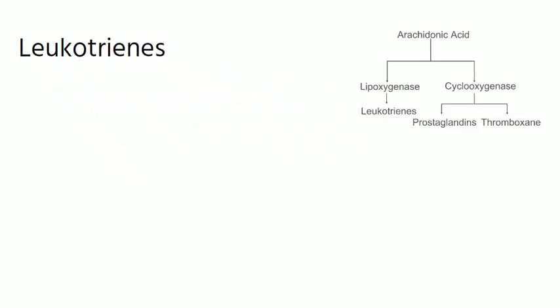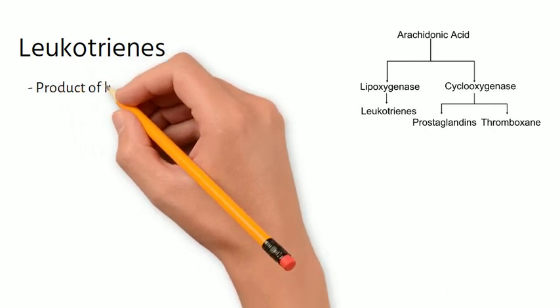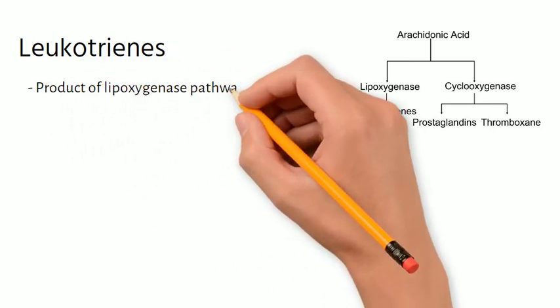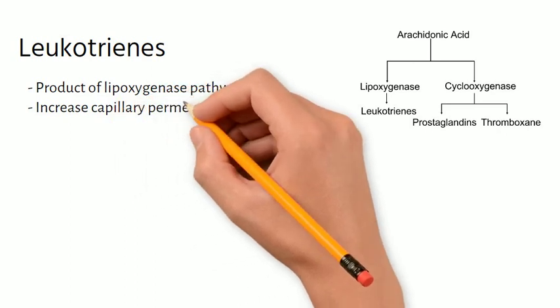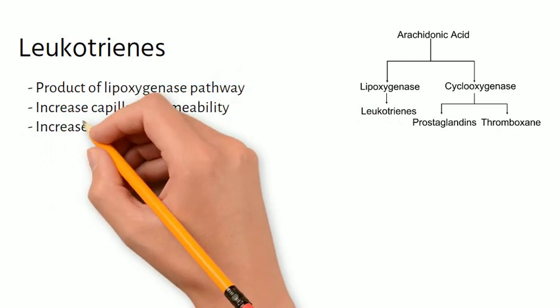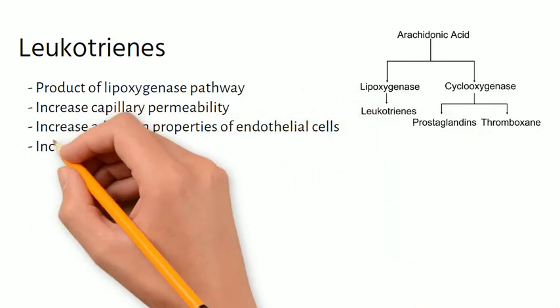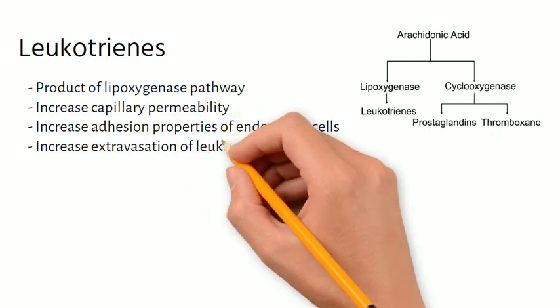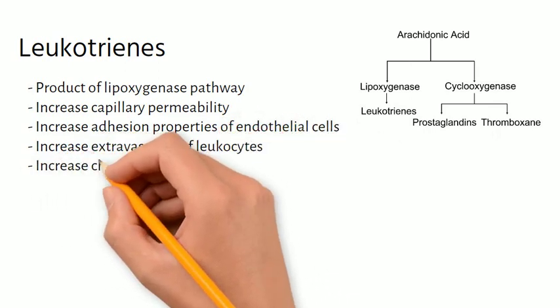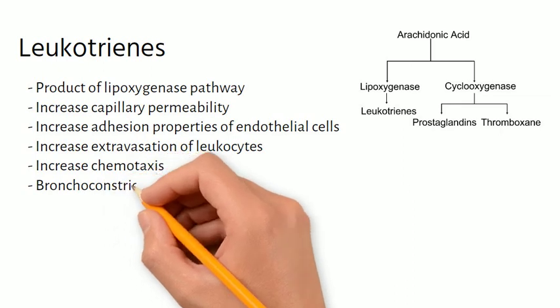Leukotrienes are an end product of arachidonic acid metabolism. Activation of the lipoxygenase pathway leads to the production of a number of leukotrienes with different effects during inflammation. These effects include increased capillary permeability, increased adhesion properties of endothelial cells, increased extravasation of leukocytes, increased chemotaxis, and bronchoconstriction.